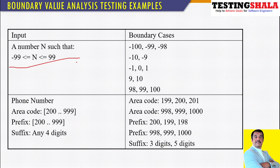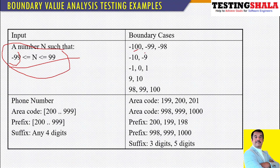Take an example. In this case, the range is minus 99 to maximum 99. What are the boundary conditions? Minus 99 is a border case. Less than that — minus 100, minus 99, minus 98 — these are the boundary cases.